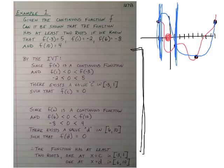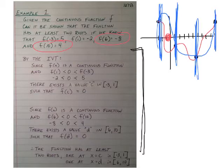Then we do the same thing, and we notice that there's a sign change from f of 6 to f of 10. So there has to be at least one root between f of 6 and f of 10, or between 6 and 10. Since the function is continuous, and f of 6 is less than 0, f of 6 is less than f of 10, we know there exists a value between 6 and 10, and we'll call that value d such that f of d equals 0.